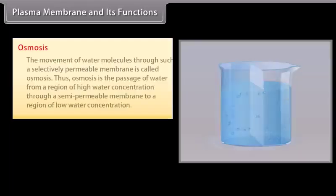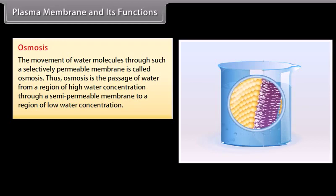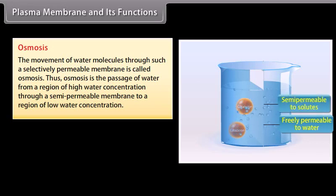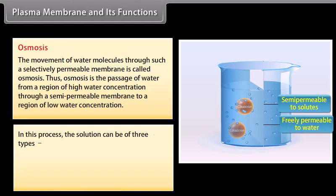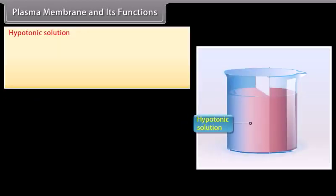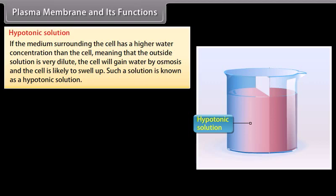The movement of water molecules through a selectively permeable membrane is called osmosis. Osmosis is the passage of water from a region of high water concentration through a semi-permeable membrane to a region of low water concentration. In this process, the solution can be of three types: hypertonic, isotonic, or hypotonic. If the medium surrounding the cell has a higher water concentration than the cell — meaning the outside solution is very dilute — the cell will gain water by osmosis and is likely to swell up. Such a solution is known as a hypotonic solution.